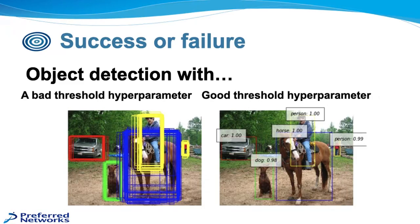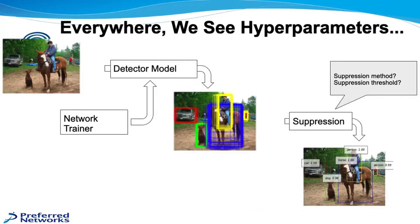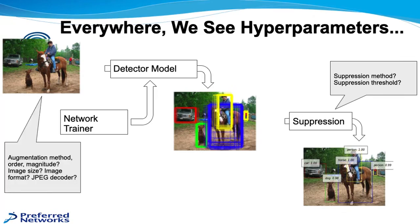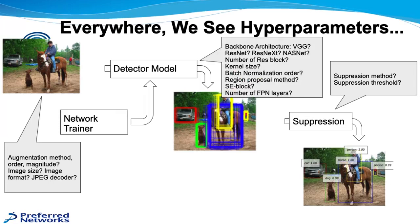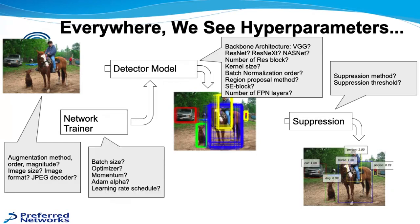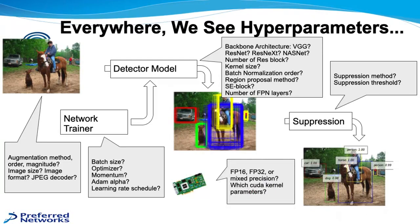But that seems like a fairly straightforward example, but actually we see hyperparameters everywhere. So in this particular example, we talked about the suppression method for the bounding boxes, so we didn't have too many, and the suppression method and the suppression threshold as the hyperparameters in question. But even if you start at the picture, we have hyperparameters of the augmentation method, the order, magnitude, image size we're going to use, the format, PNG, JPEG, if you use JPEG, then what decoder you use. Then in the detector model, what model you're going to use, VGG, ResNet, NASNet, the kernel size, batch normalization, the number of FPM layers. And then within the network trainer, you have the batch size or the optimizer, whether you're using Momentum or Adam or other things, and the learning rate schedule or the learning rate itself. And then even as you go down to the GPU level, then you have the FP16 or FP32, mixed precision, and the CUDA kernel parameters, which as we mentioned now in CuPy are automatically trained by Optuna.